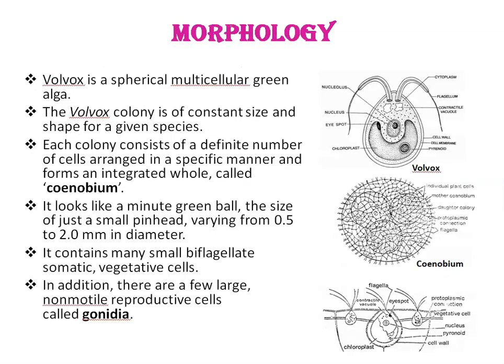Next is Morphology. Volvox cells are spherical or ovoid, as you can see in this diagram, having a cup-shaped chloroplast, 2 flagella, nucleus, vacuoles and an eye spot. The eye spot helps with light perception and contributes in phototaxis.